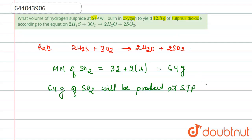64 grams of SO₂ produced at STP corresponds to 22.4 liters of H₂S, because their moles are the same, so their volume will be the same.